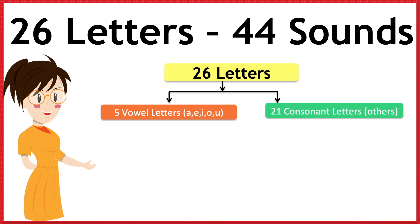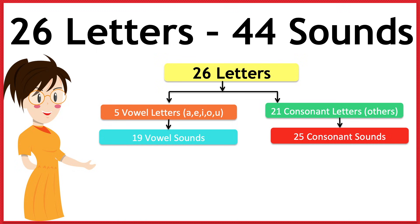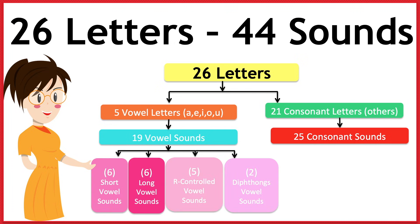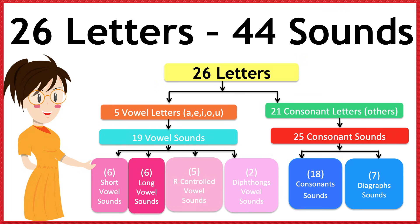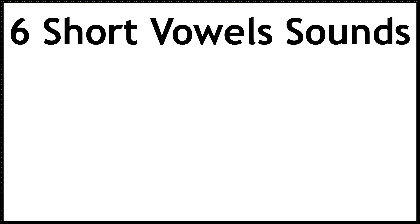Now we know, kids, there are 26 letters. Out of that, five are vowel letters — A, E, I, O, and U — and the remaining are consonant letters. We will see how these 26 letters make 44 different sounds. From five vowel letters we get 19 vowel sounds, and from 21 consonant letters we get 25 consonant sounds. The 19 vowel sounds are further divided as six short vowel sounds, six long vowel sounds, five R-controlled vowel sounds, and two diphthongs. The 25 consonant sounds are further divided as 18 consonant sounds and seven digraphs.